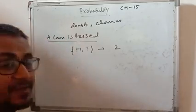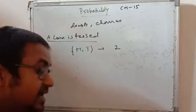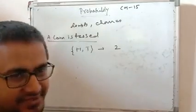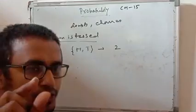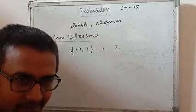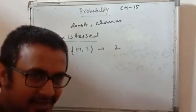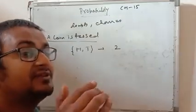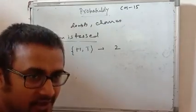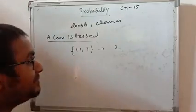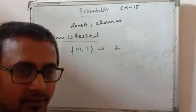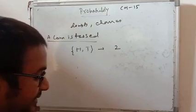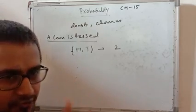This is called a random experiment. Random experiments are those experiments whose outcomes you know, but what will come exactly you can't say. Same way, if you throw a die — die means ludo die — what will come? One, two, three, four, five, or six. You know this, but you can't say that exactly five will come. The chance of getting five is less because there are six options. All these come under probability.